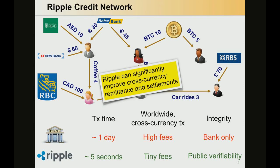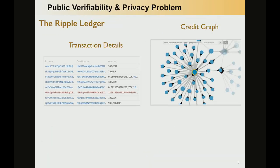Ripple is today the third currency in the CoinMarketCap, and it has several advantages with respect to the current banking system. Nevertheless, given the success of the public blockchain in Bitcoin, the Ripple network has opted for the same approach — we have a publicly available Ripple ledger in which we can see all the transactions that happen in the system, in the whole history, and all the credit links between any two users.